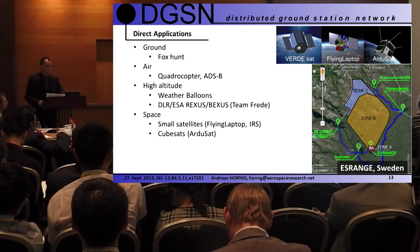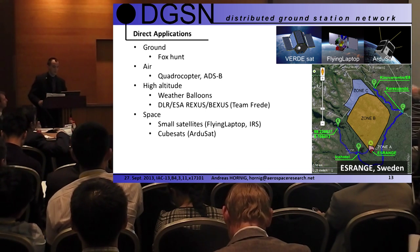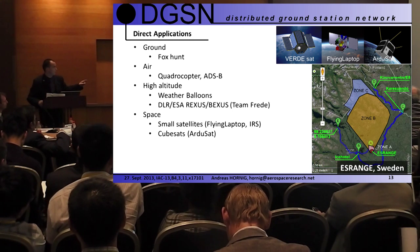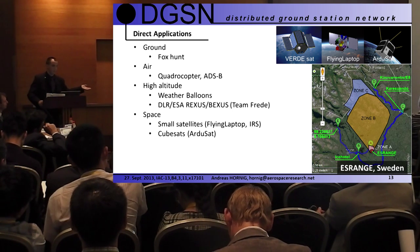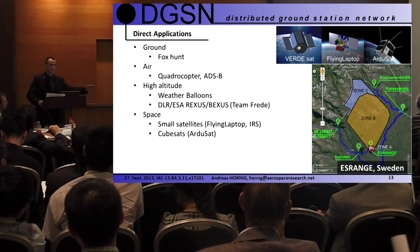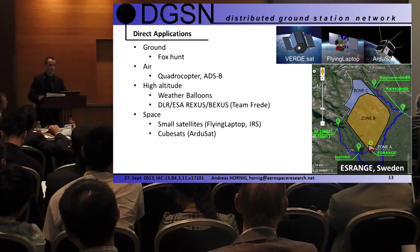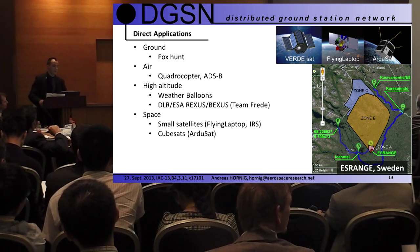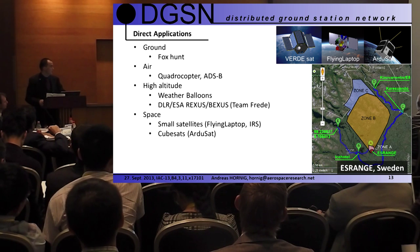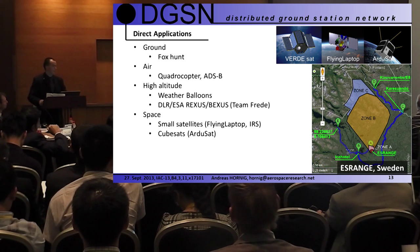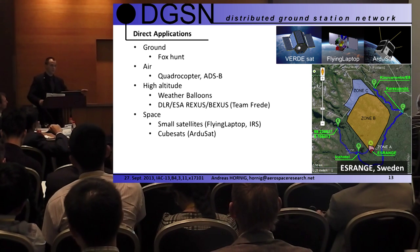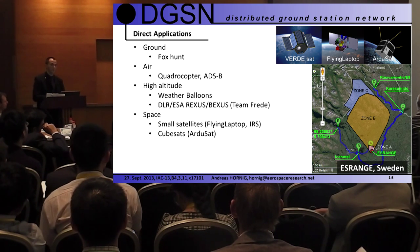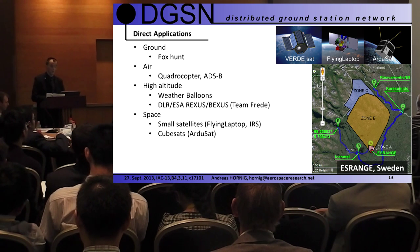Direct applications go beyond satellites — that was just a starting point. Our first testing application is fox hunting, where someone hides in a forest with a beacon and others try to locate them. Another application is ADSB — air traffic control position broadcasting — where we can use the airplane's broadcast position as a ground truth to verify whether our calculated position matches the transmitted one, serving as a validation test for our system.